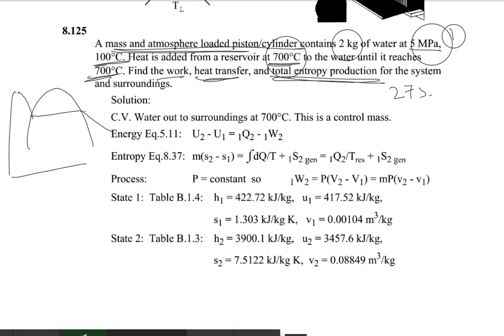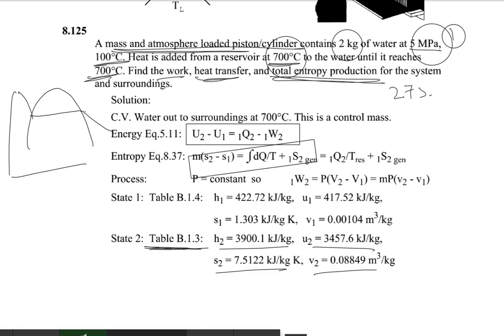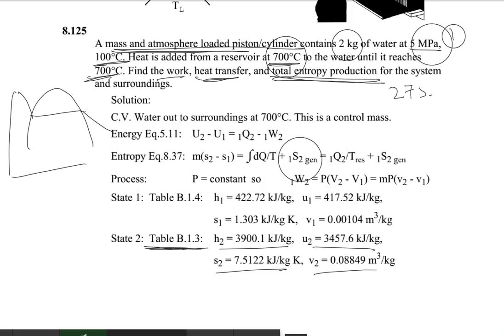For state 2 at 700°C, we use the superheated steam table, Table B1.3, to get the values of enthalpy, entropy, internal energy, and volume. We then apply the first law of thermodynamics and the entropy generation formula. Recall that the entropy generation equation states: change in entropy equals dQ/T plus the entropy generated — that entropy generated term is what we solve for.